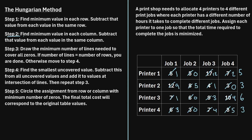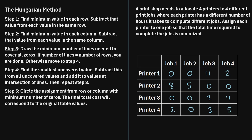Step two of the algorithm says: find the minimum value in each column and subtract that value from each value in the same column. In the first column, the minimum value is one. In the second column, it's zero. In the third column, it's one. And in the fourth column, it's zero. For example, 1 minus 1 becomes zero, 9 minus 1 becomes eight, 1 minus 1 becomes zero, and 3 minus 1 becomes two. We repeat that process for each column, then update the table with the new values.